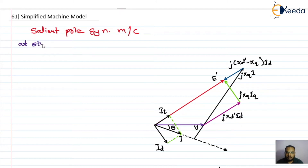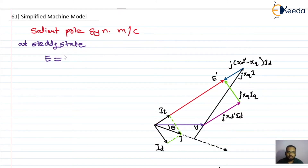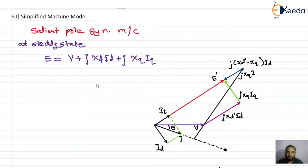At steady state condition, during steady state operation, we know that the induced EMF is calculated for the synchronous machine as: E = V + j·Xd·Id + j·Xq·Iq. Here Xd is greater than Xq, where Xd is the direct axis reactance and Xq is the quadrature axis reactance.